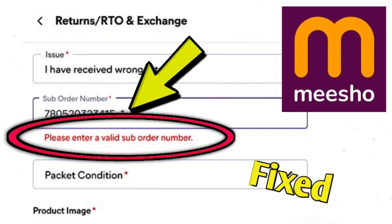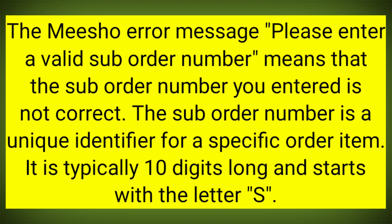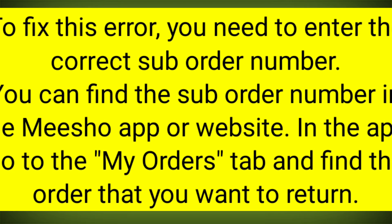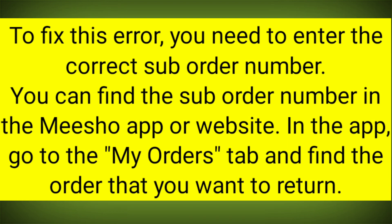The MeShow error message 'please enter a valid sub-order number' means that the sub-order number you entered is not correct. The sub-order number is a unique identifier for a specific order item. It is typically 10 digits long and starts with the letter S. To fix this error, you need to enter the correct sub-order number.